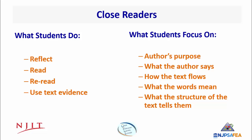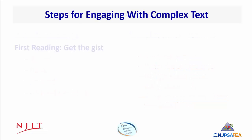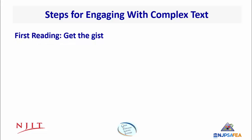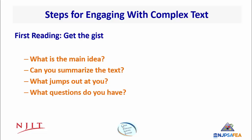At the secondary level, the following steps can ensure that students are provided the needed opportunities to engage with a complex text. First, read to get the gist. Then, ask learners these questions: What is the main idea? Can you summarize the text? What jumped out at you? What questions do you have?